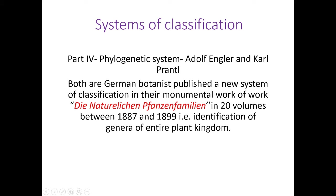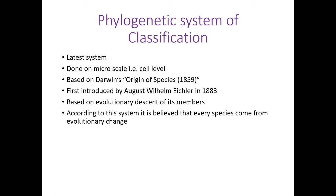This system of Engler and Prantl is very popular in European countries. Now let us see some general characteristic features of the phylogenetic classification system. First, it is a very latest system done on a micro scale, that is at the cell level, based on Darwin's 'Origin of Species', published in 1859. The systems proposed by different botanists after Darwin are also called post-Darwinian classification systems, or they are also called phylogenetic classification systems.